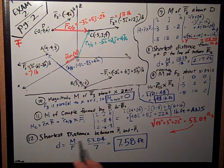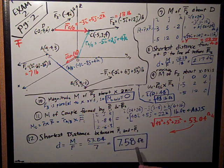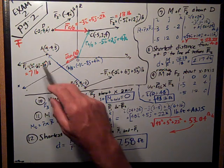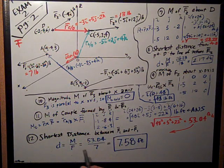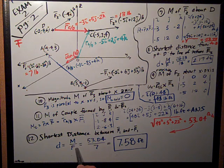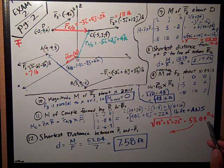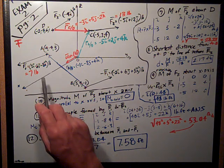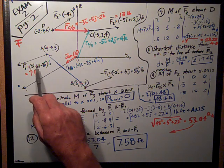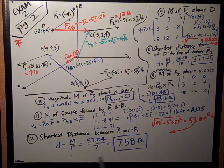Finally, number 12, I wanted to know the shortest distance between f1 and negative f1. So, that's the perpendicular distance, perpendicular to the line of action of the force, and that's the scalar moment divided by the scalar force. I take the square root of the sum of the squares up here of this answer on number 11, and I get that the magnitude of the moment is 53.04 pound-feet. The magnitude of this force vector, 2, negative 6, and negative 3, is 7 pounds. So, 53.04 divided by 7 is 7.58 feet.